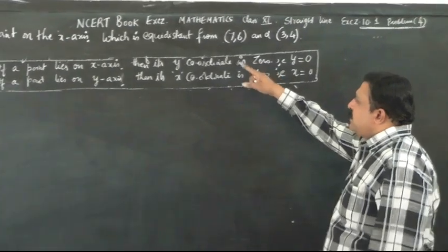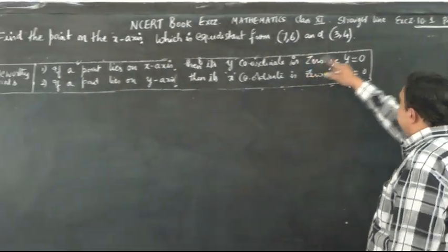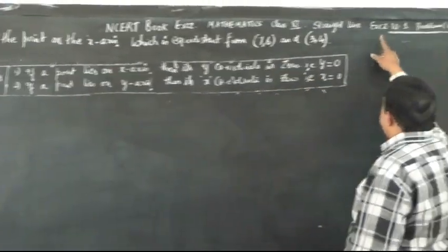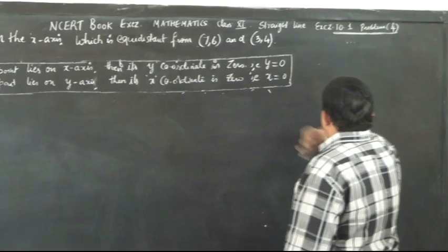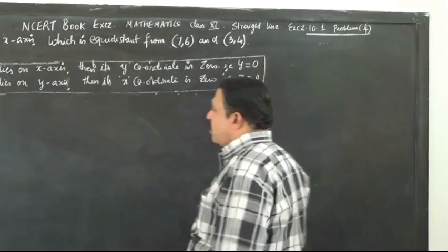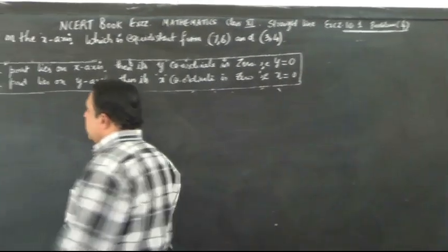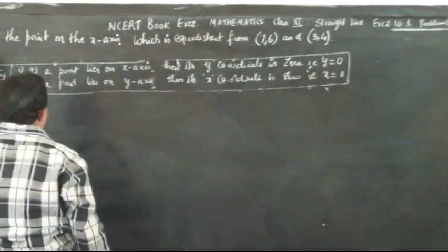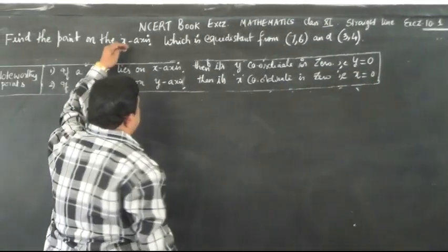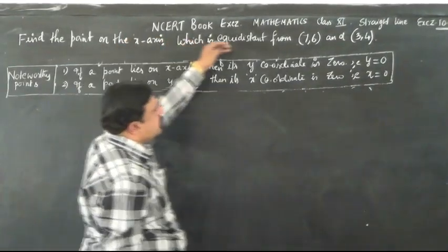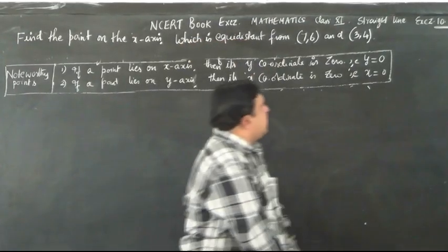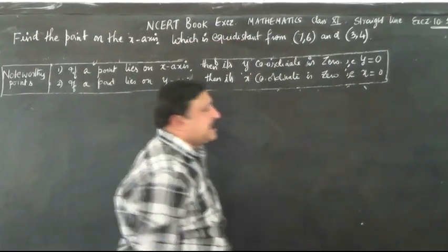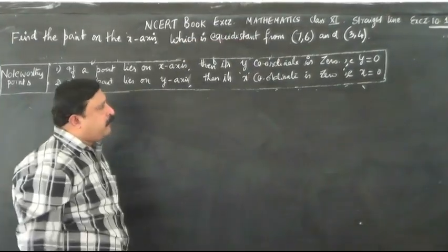This problem is from the engineering book mathematics, Exercise 10.1, problem 4. Find a point on the x-axis which is equidistant to the points (7, 6) and (3, 4).